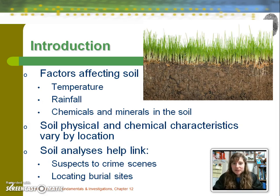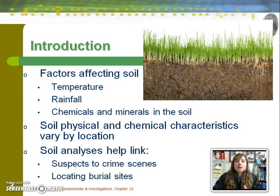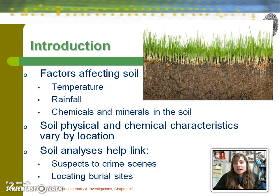Welcome to another sub-discipline of forensics, which breaks out into fascinating science in other realms. There are several things that affect the soil which can be used as forensic evidence: temperature, rainfall, chemicals, minerals. There are a variation of physical and chemical characteristics of soil that vary by geography, which is imperative in helping identify where a body had been killed and then moved to another place if the soil does not match the type found where the body is.